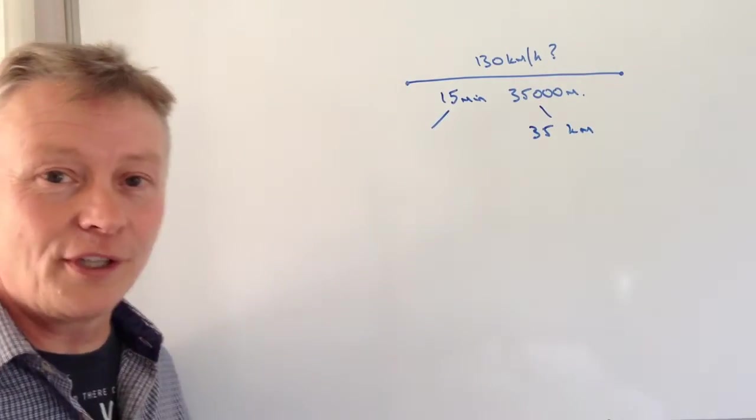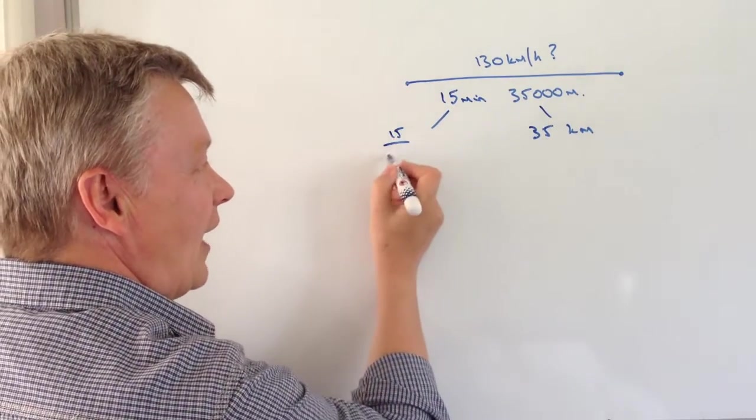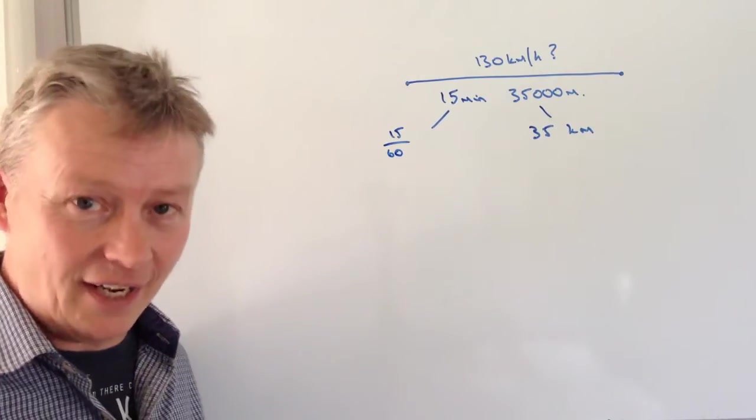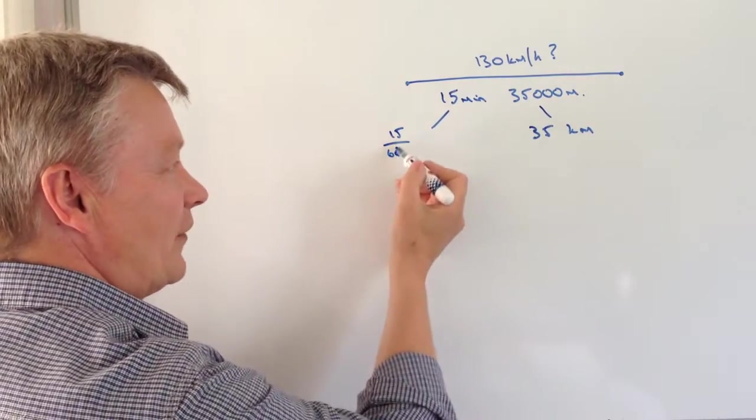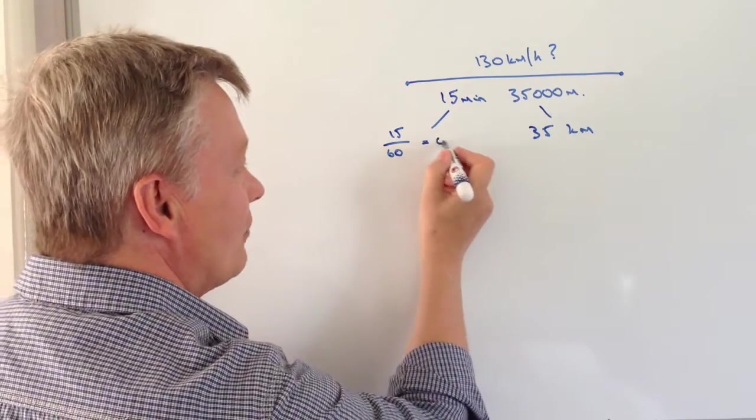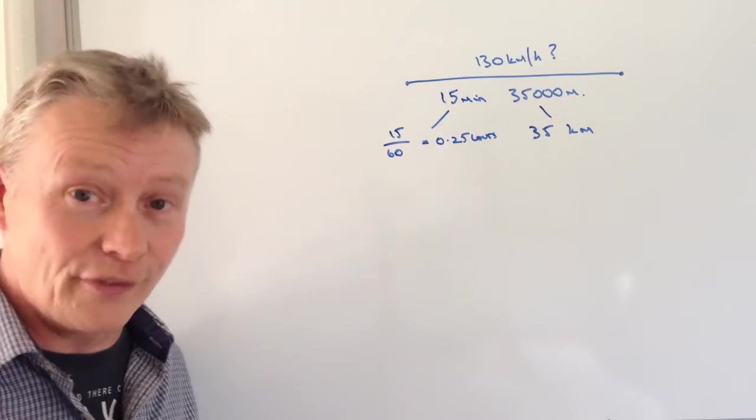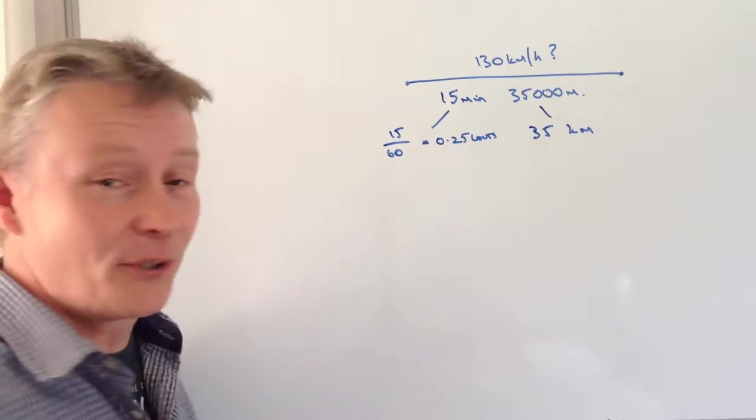I need to also convert the 15 minutes into hours. The way I'm going to do that is 15 out of 60 minutes as part of an hour, so therefore that's going to be 0.25 hours. In other words, a quarter of an hour, but this is the decimal equivalent.